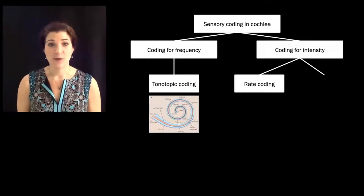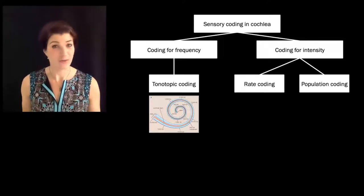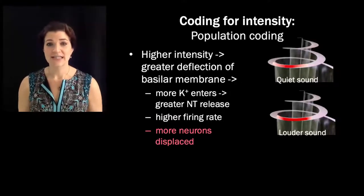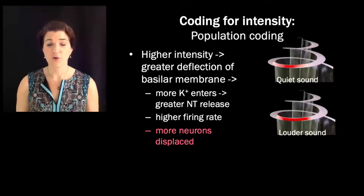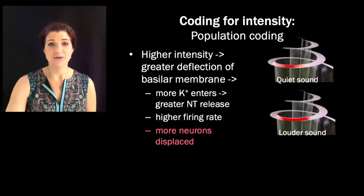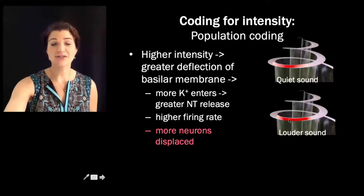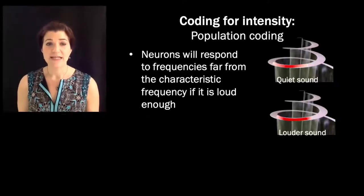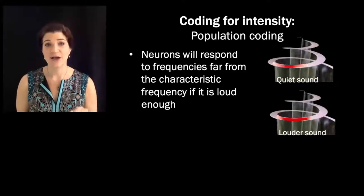A second mechanism by which we code for intensity is how many neurons are firing — known as population coding. When sounds are of higher intensity, there is more movement of the basilar membrane, which means more neurons are activated along the basilar membrane than would have been for a quiet sound. So if a quiet sound stimulates a small chunk of the basilar membrane, a louder sound is going to stimulate a larger section, meaning more neurons fire in response to it.